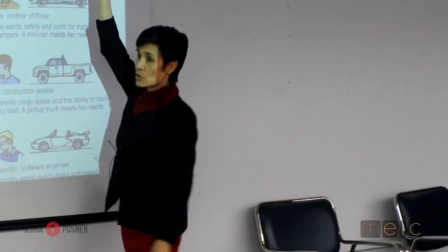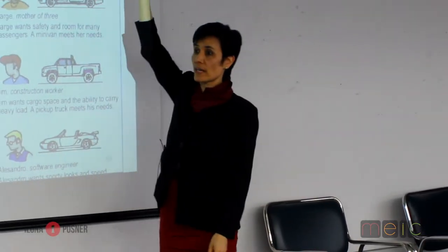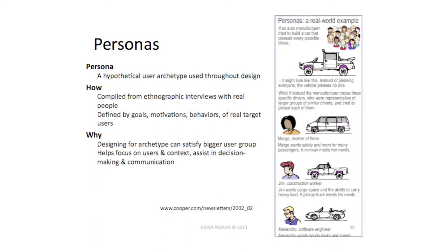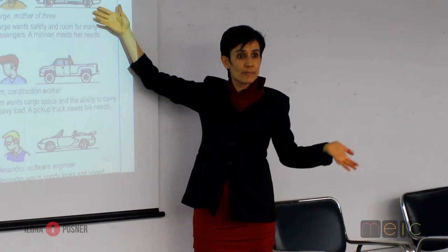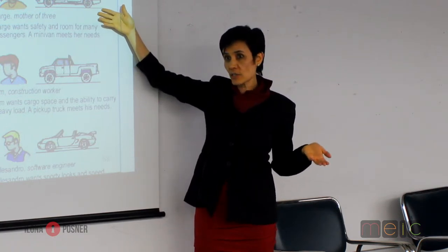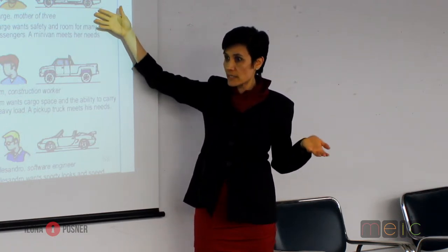This example is great. If you take everybody's needs into one car, you get something nobody wants — you get this jalopy. If you instead look at Marge the mother of three, Jim the construction worker, and Alessandro the software engineer, you get three different cars. But the car that's good for Marge the mother of three is also good for a little league coach, a scout master, some construction workers, and so on.